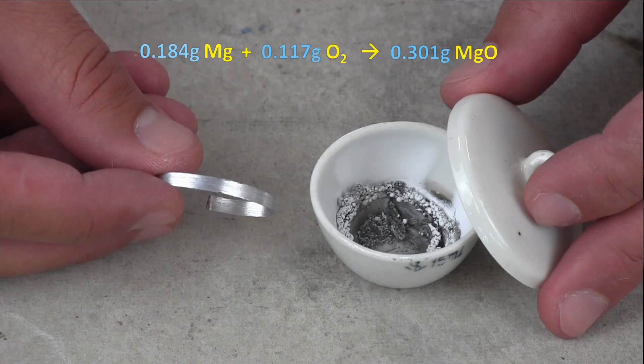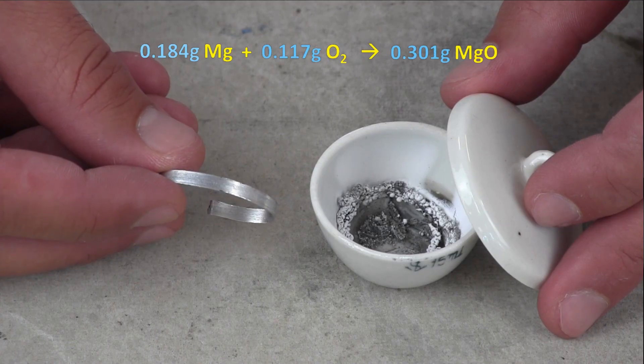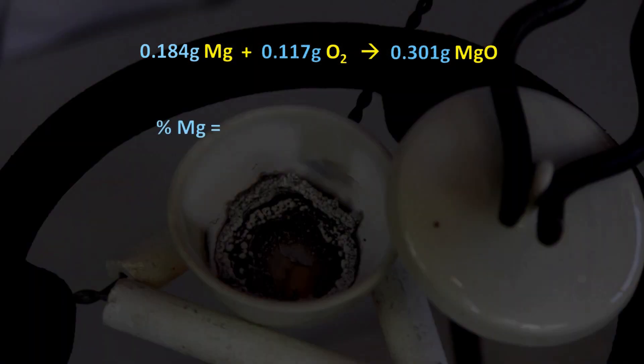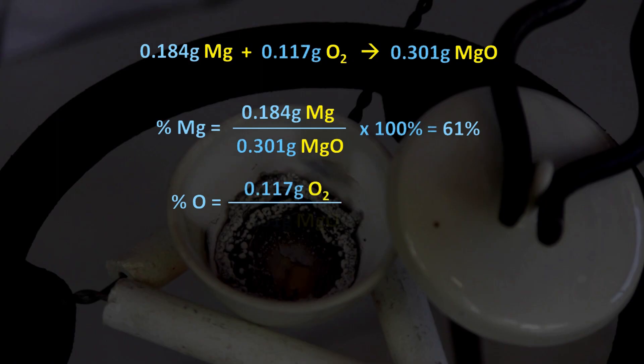These figures can tell us a lot about magnesium oxide itself. As a percentage, magnesium makes up 0.184 grams of the 0.301 grams of magnesium oxide, which is about 61%. While oxygen makes up 0.117 grams of the 0.301 grams of magnesium oxide, which is 39%.